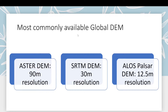Before proceeding to the download procedure, I want to talk a little bit about the resolution of globally freely available DEM datasets. First of all, there is the ASTER DEM — this is 90-meter resolution. Then there is also the SRTM DEM, which is 30-meter resolution. Both can be downloaded from the USGS Earth Explorer website.